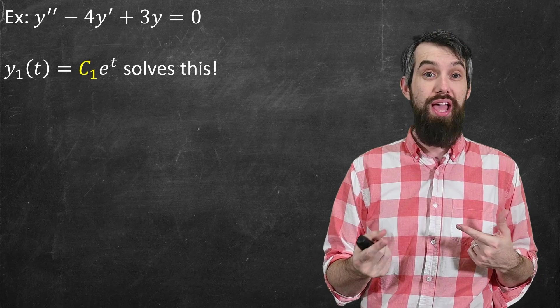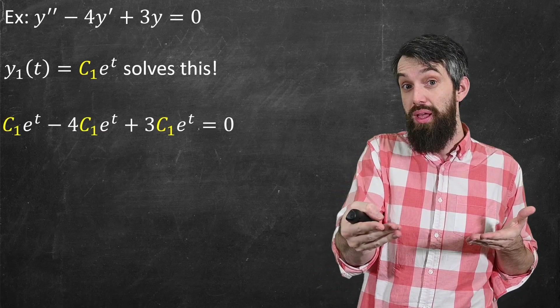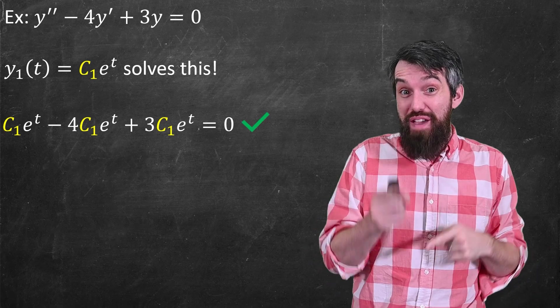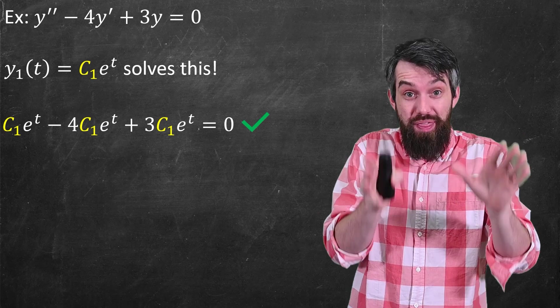I mean, constants just come out of derivatives, so it's just a c1 in front of every term, and so that adds up to 0 in just the same way. So we already have an infinite family of solutions, but it's actually even more complicated than that.